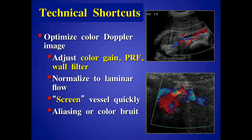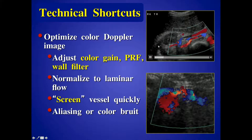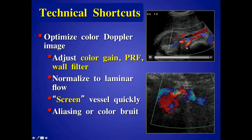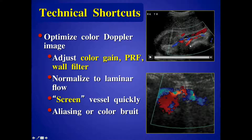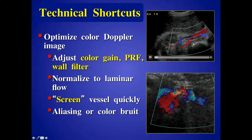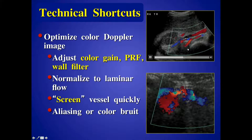Here's another look at the right renal artery, very well seen. No aliasing, no flow disturbance — so we have a really good idea there's no underlying stenosis even before we get our Doppler velocity measurements. In this particular case, we also notice early branching of the renal artery. Nice to see those anomalies right away.